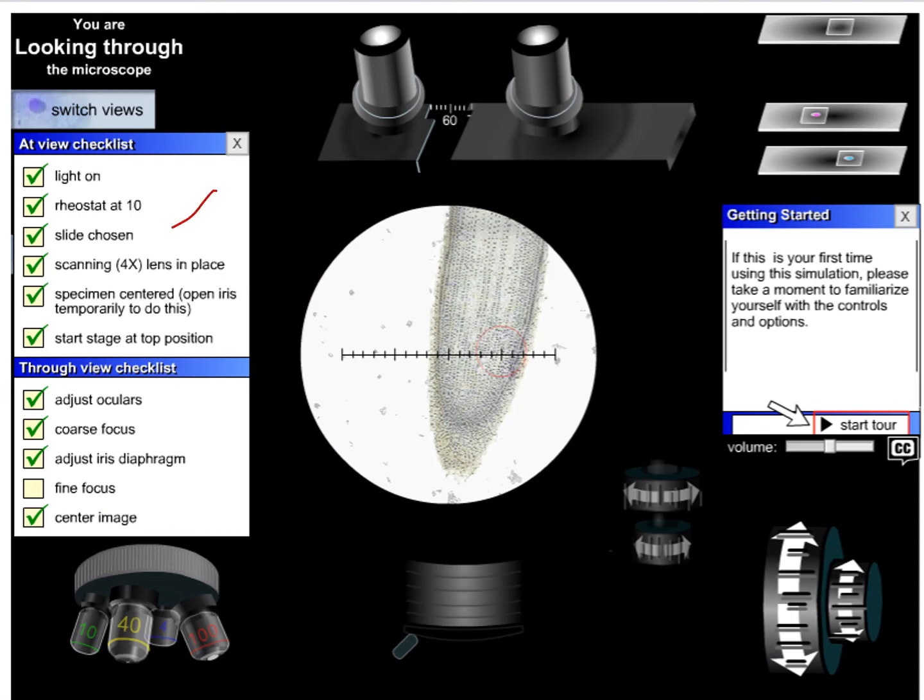If you need to check the through view, what you do is you're going to go up here and click on switch views, and then you'll be moved to another field of view that tries to basically simulate actually looking through the eyepieces, and then you'll need to adjust some things to make all of these checks come here. So did you adjust the oculars? That means these two fellows up here. Have you adjusted the coarse focus, the iris diaphragm that is right down here, the fine focus, and then also have you centered the image? You need to experiment with moving all of these various manipulatables, the focus, the stage, left, right, forward, back, all that.